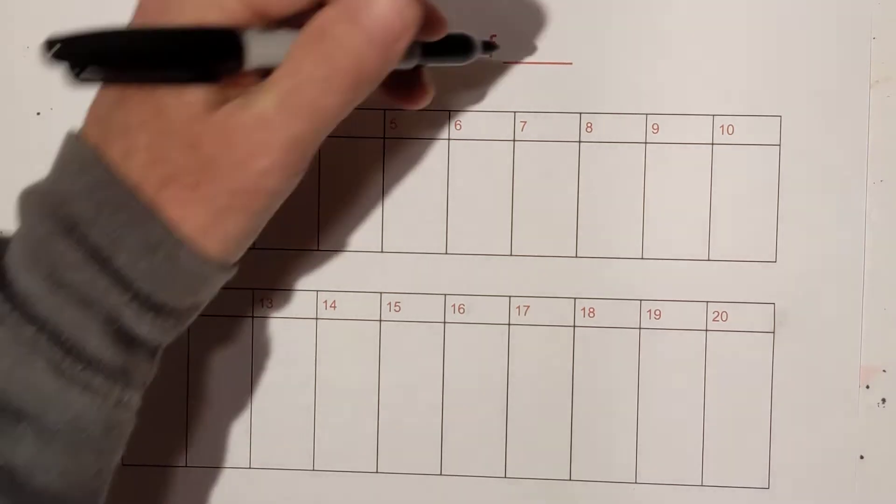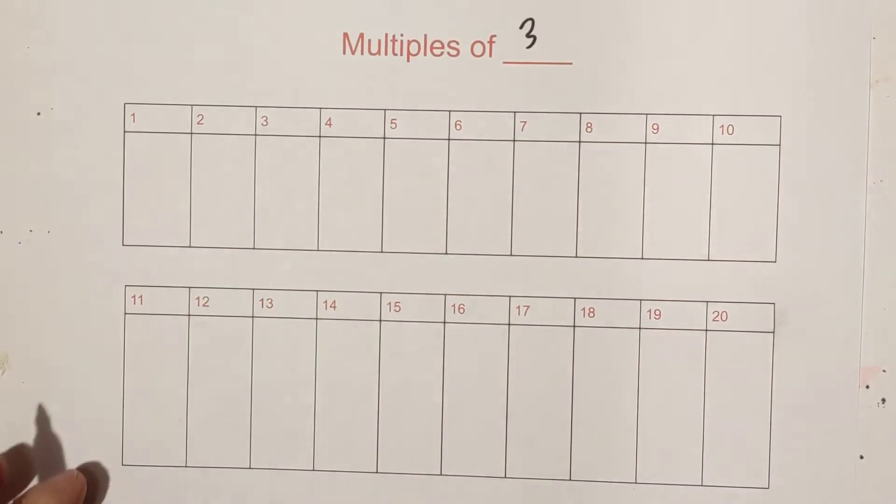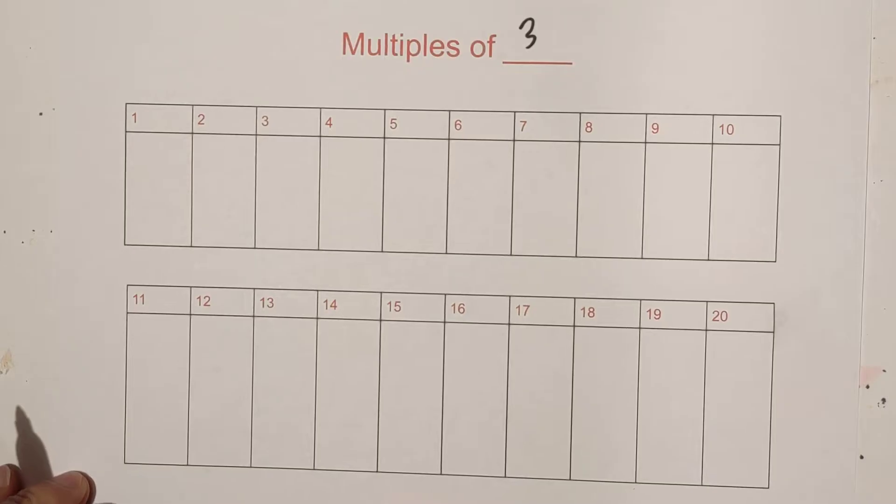Welcome to Moomoo Math and Science and the multiples of 3. I'll go up to 20. Let's get started and you'll see that there's kind of a pattern that takes place.